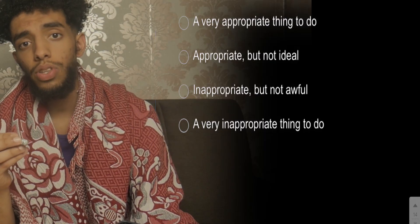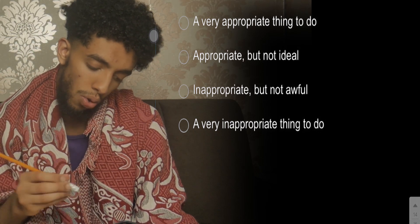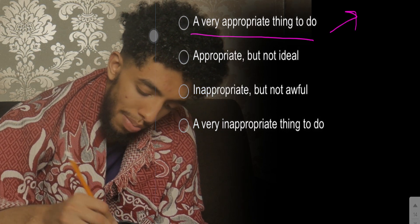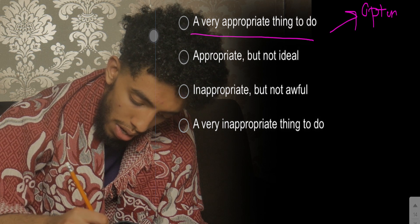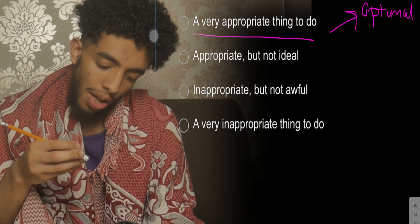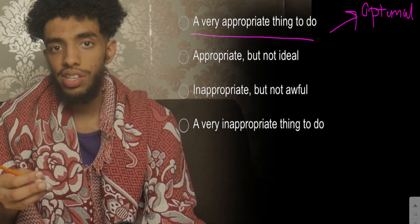Welcome back. We're at the last section — SJT. We're going to go through the four different types of answers that you can give for the appropriateness questions, and we'll run through the iPad animation. So I'm going to be explaining what these four options actually mean. The first is 'very appropriate thing to do,' which basically means this is the optimal, the best thing that you can do, and it directly addresses the issue at hand.